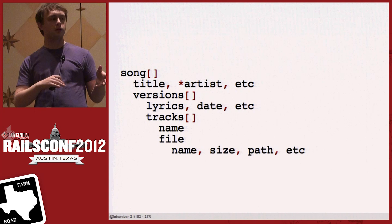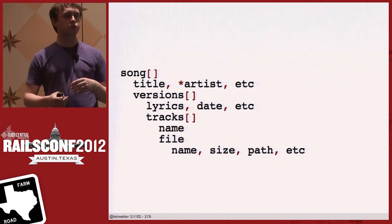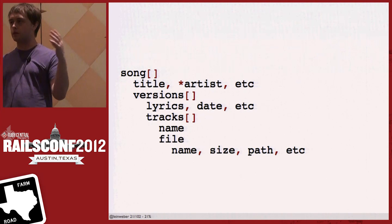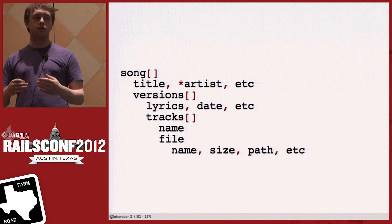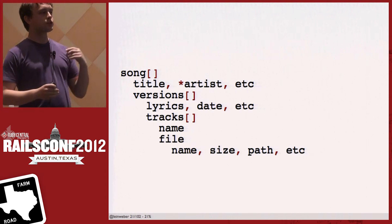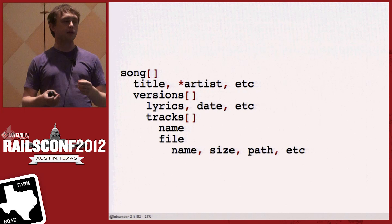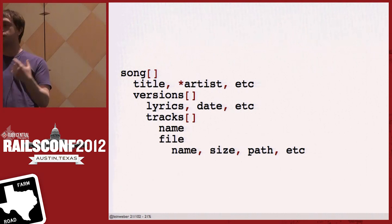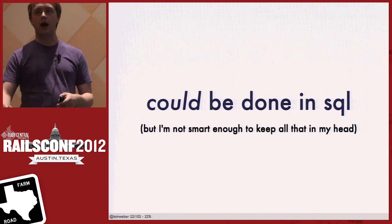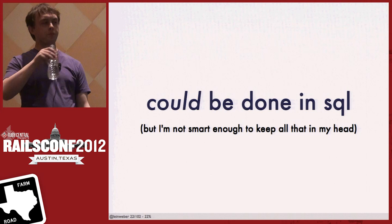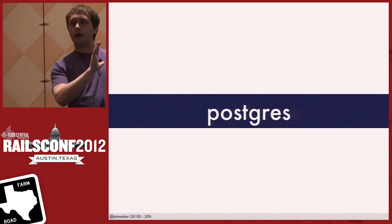One example of why I chose Couch previously: I founded a startup that did versioning for songs. I had songs, each with a title, a pointer to an artist, and other metadata. Each song had an array of versions — one, two, three, four, five. Each version had lyrics, a date, and an array of tracks, and tracks had their own metadata. While I could have probably done that in SQL, I just couldn't figure out a nice schema for it. That's why I think documents are fantastic.